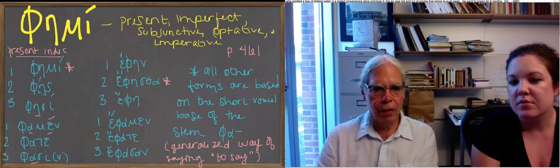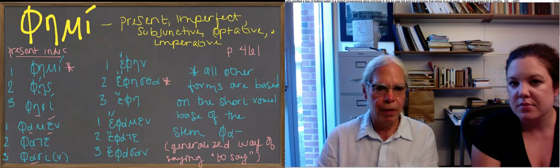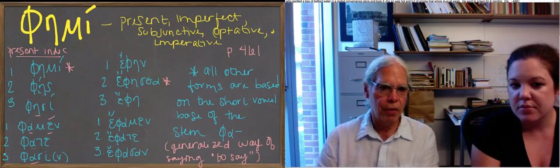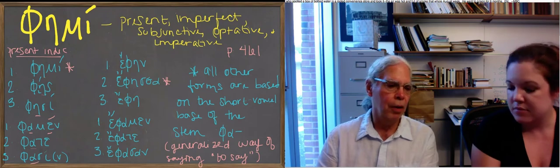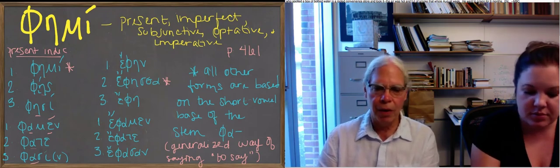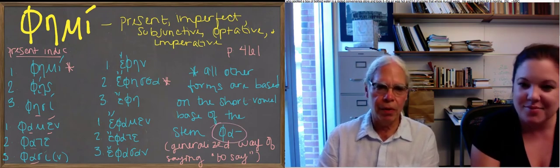And so there are the present and the imperfect of this verb in the active voice. All the other forms of it are based on the short vowel stem fa. The book says something about another stem with an epsilon, but it's, I believe, mistaken.